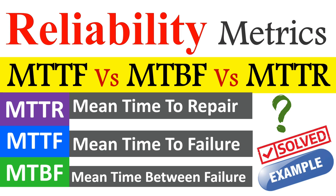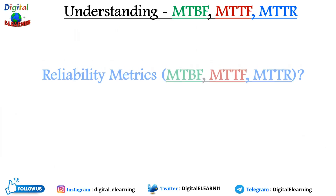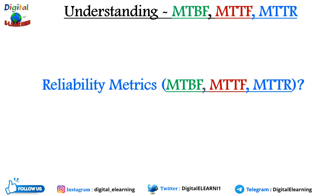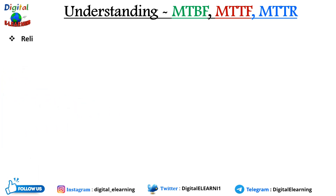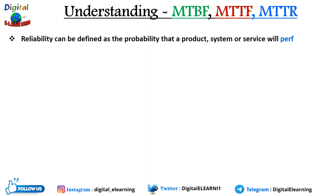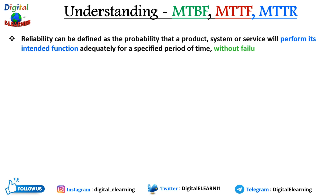Please watch this video till the end. To understand these terms, we first need to understand what reliability and failure are. Reliability can be defined as the probability that a product, system, or service will perform its intended function adequately for a specified period of time, operating in a well-defined environment without failure. In short, reliability is maintaining quality over a period of time.